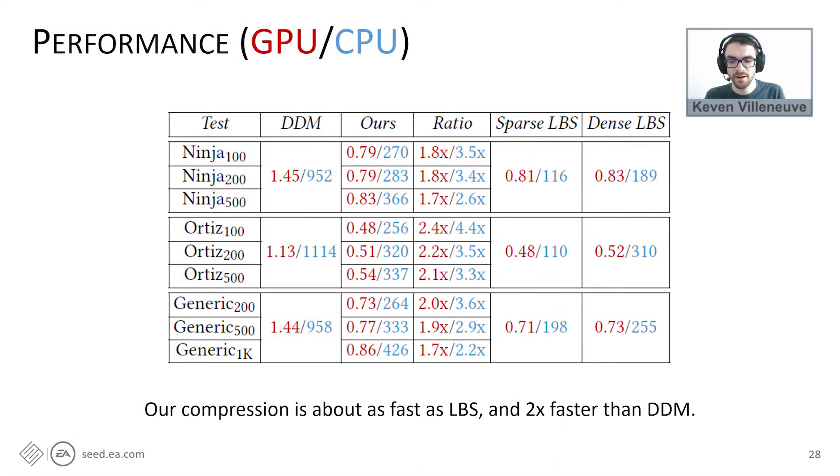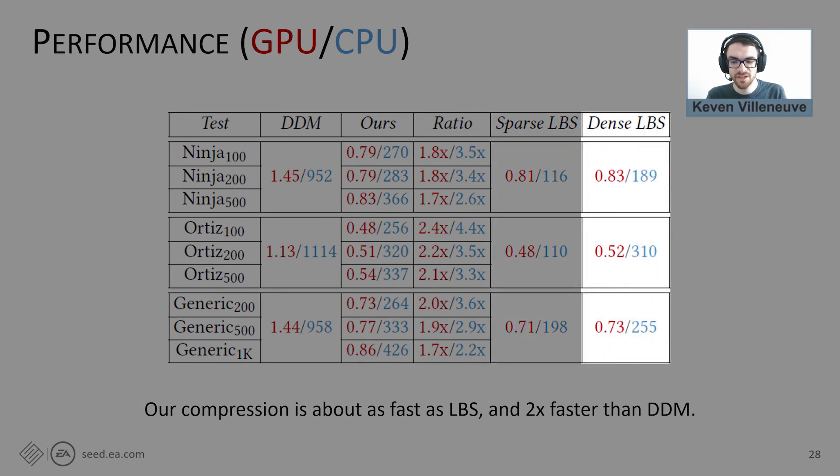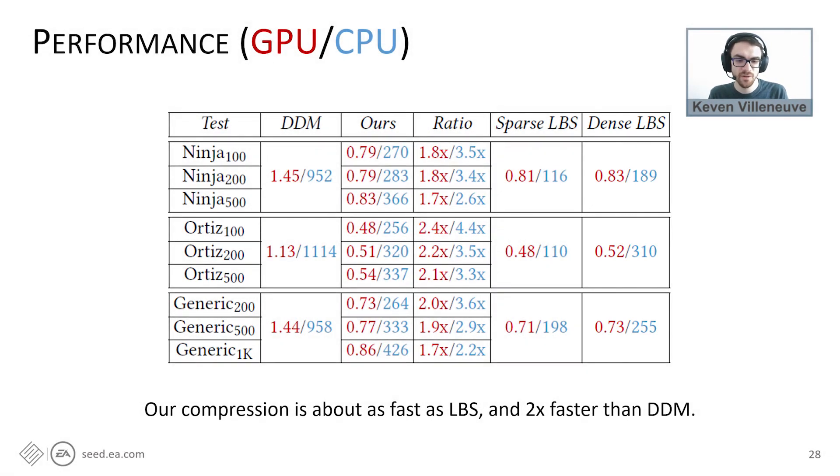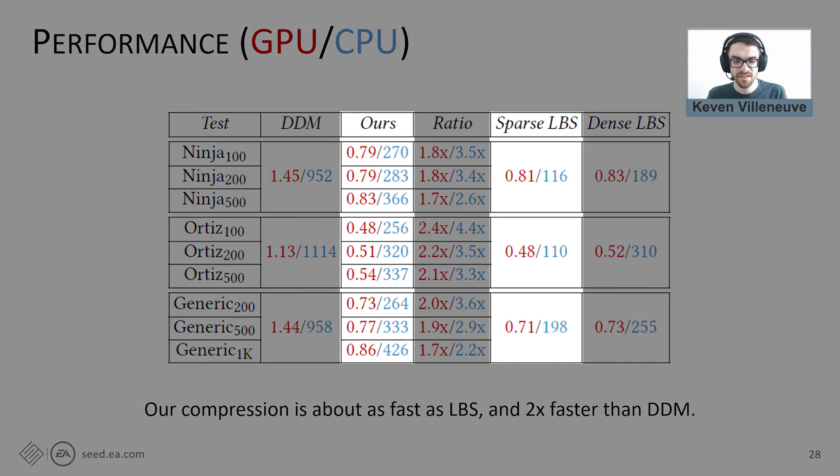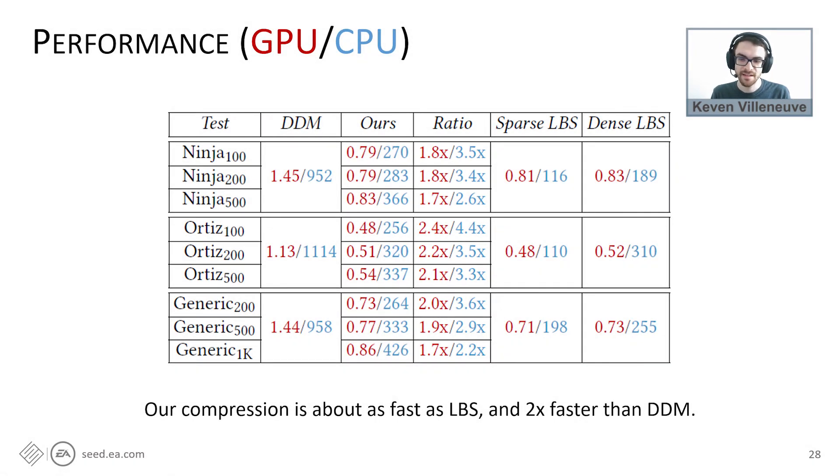Here is the performance comparison between our model, DDM, and LBS. Sparse LBS denotes the original LBS model, and dense LBS denotes the model generated by DDM variant 5, which has more non-zero weights than the original LBS. Numbers in this table are average skinning time per vertex in nanoseconds. We can see that our model is about as fast as LBS, and two times faster than DDM. So we hope that our technique can overcome the performance overhead and gain industry adoption, just like the classical LBS did.